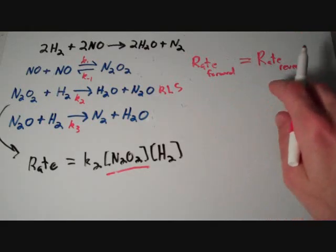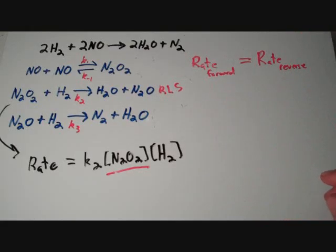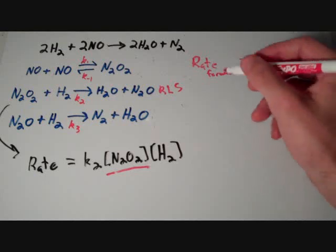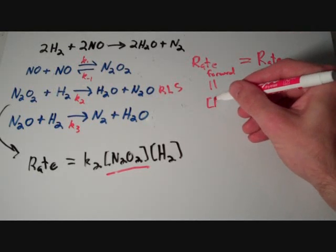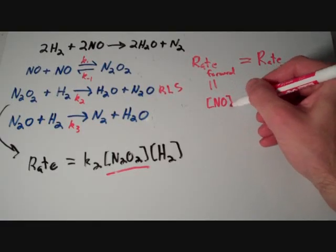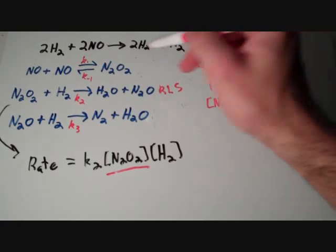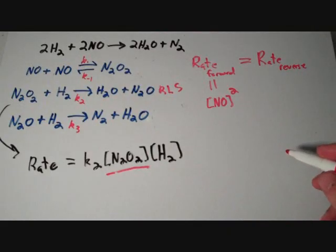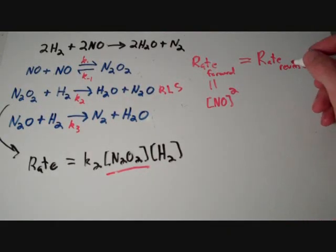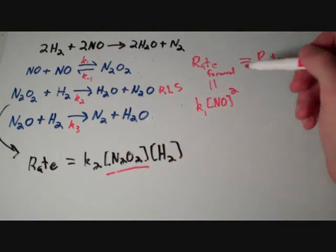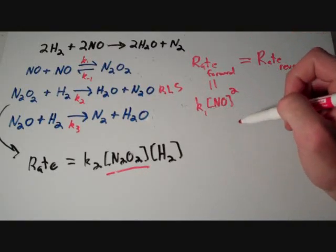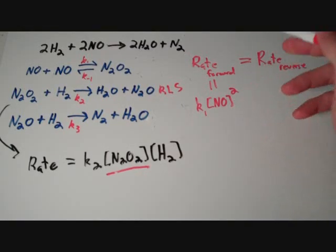How do we express these rates in terms of rate laws? Well, let's look at the forward reaction first. We can express the rate in terms of the forward reaction by saying that the rate of the forward reaction is equal to the concentration of NO squared. Remember, because this is a bimolecular elementary step. Times K1. Don't forget the rate constant. So, the rate of the forward reaction equals K1 times the concentration of NO squared.